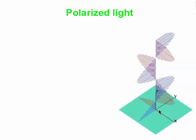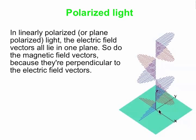We have a picture here showing an electromagnetic wave — a plane polarized, or linearly polarized electromagnetic wave. Plane polarized and linearly polarized mean the same thing. The electric field vectors all line up along one particular plane, and the magnetic field vectors all line up along another plane. The magnetic field vectors are always perpendicular to the electric field vectors.